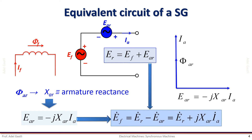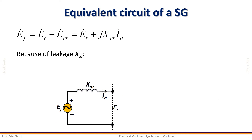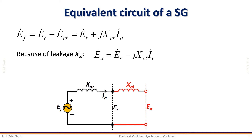From the resultant air gap voltage equation, we can obtain the excitation voltage EF as shown here. Because of the leakage reactance, there will be a further equivalent voltage drop inside the armature, leading to this equation of the armature voltage. This can be represented by this additional circuit.